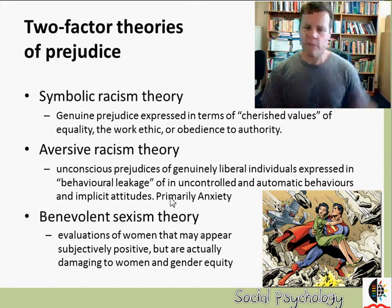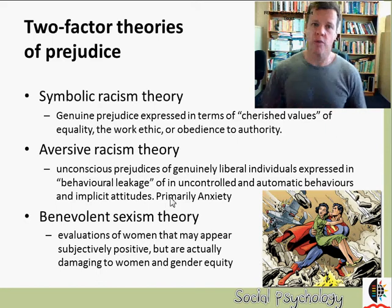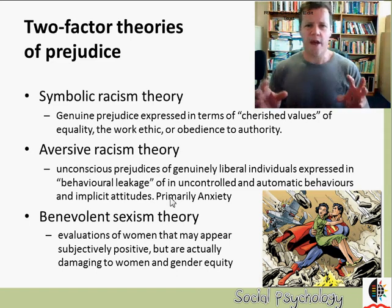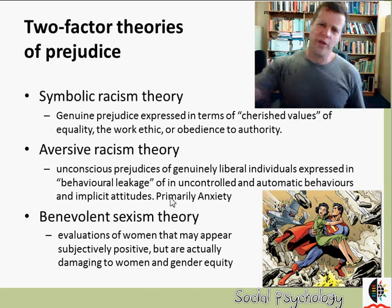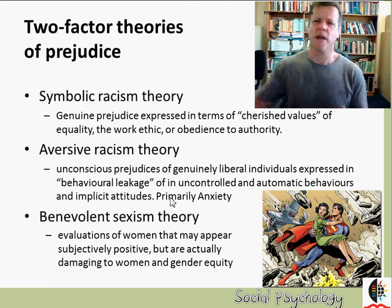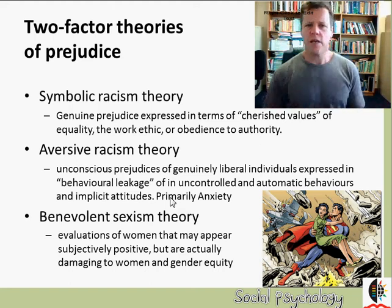There are a number of different theories of how these two-factor models work. The first, which has become common over the past 30 to 40 years, is symbolic racism theory. This theory argues that people might recognize they have preferences for their own group or prejudices toward other groups, but they only express these in politically correct ways — framed in terms of cherished values. For example, race prejudice can be expressed indirectly through beliefs that certain groups have received more than they really deserve.